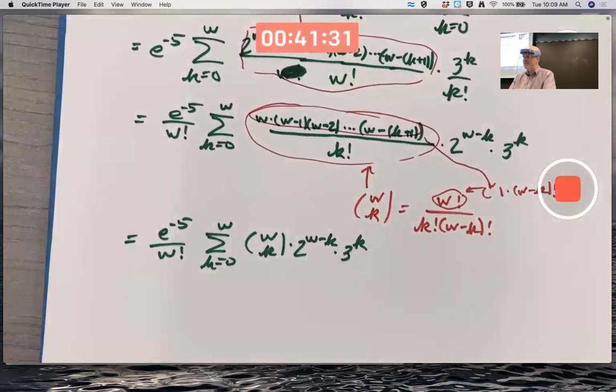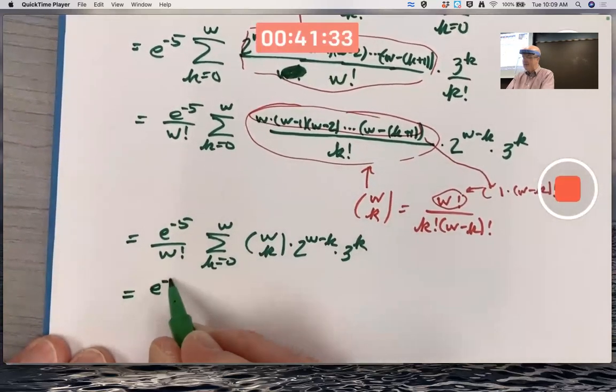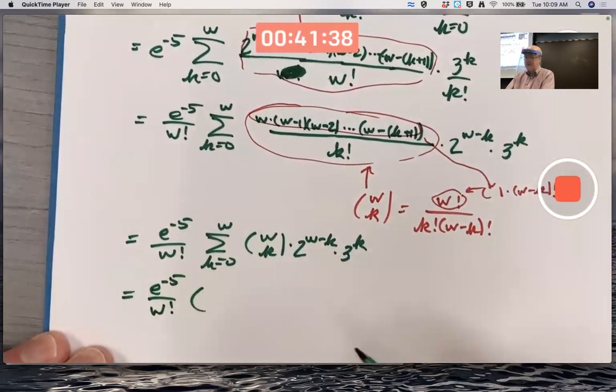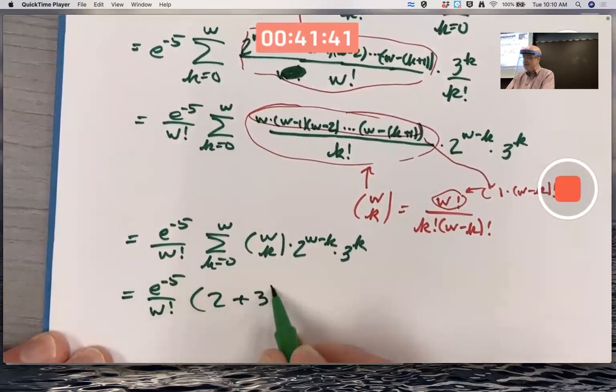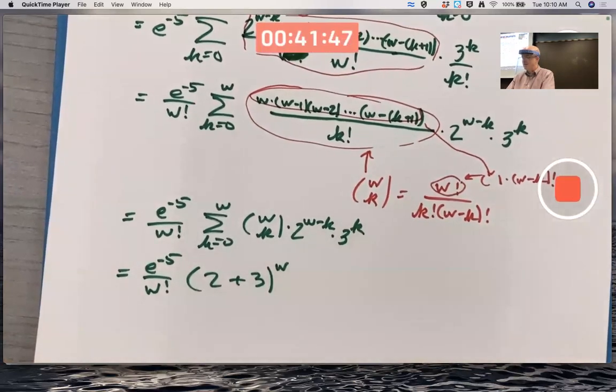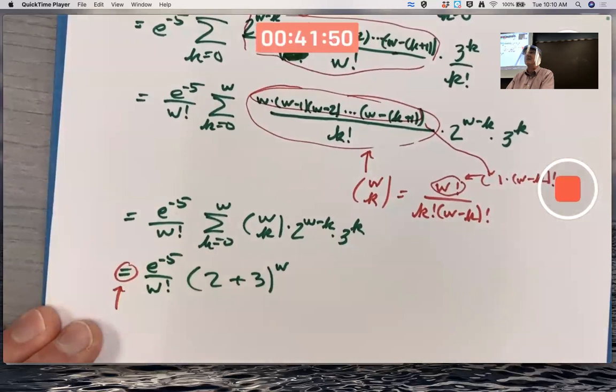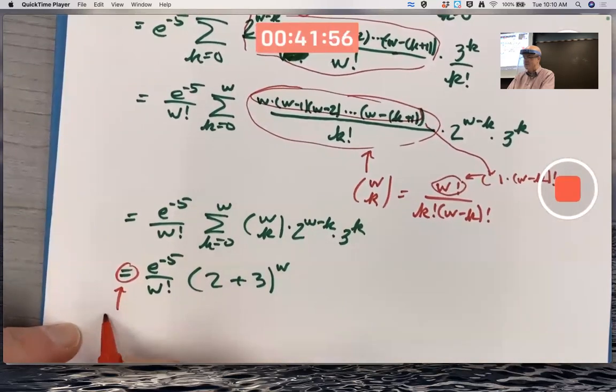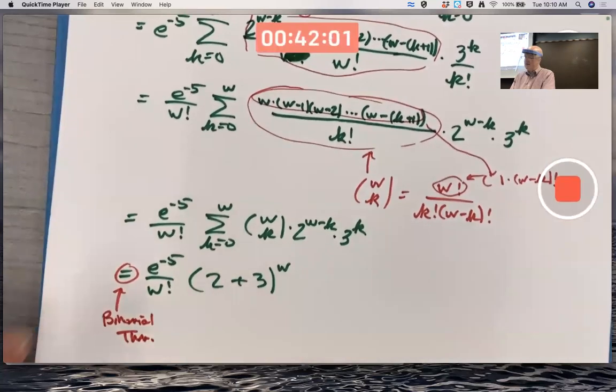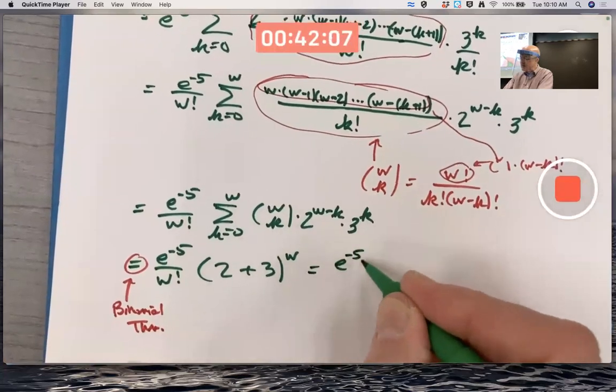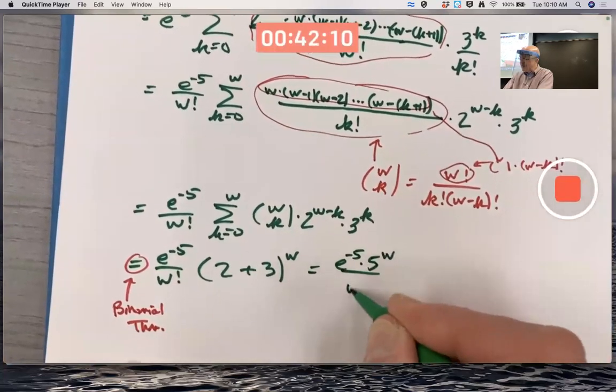The binomial theorem allows us to simplify that summation greatly to two plus three to the W power. That's the binomial theorem. Right? Usually, you know, A and B are letters like A and B or something. Or P and Q. But here they're actual numbers. And there we have it. Isn't this beautiful? It's simplified to the PMF of a Poisson with mean five.